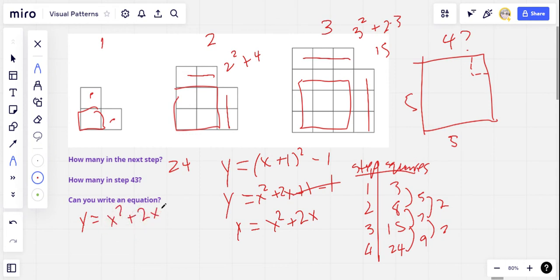And then all we have to do is use that equation to figure out how many squares in step 43. So we need to square 43. So 43 times 43 is 1000. Actually, let me write out the equation. So y equals 43 squared plus two times 43. So 43 squared is 1849. And two times 43 is 86. So that's going to equal 1935.